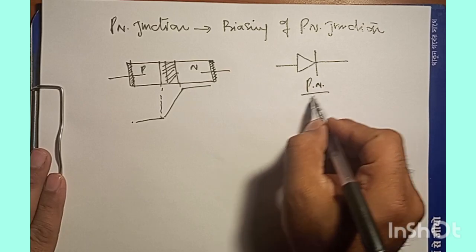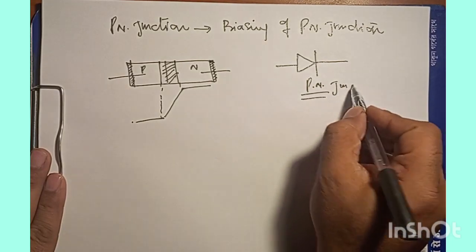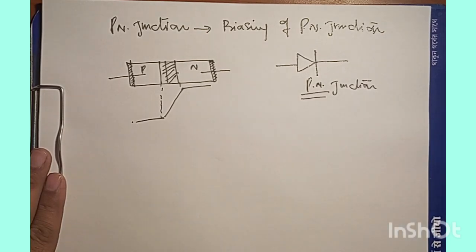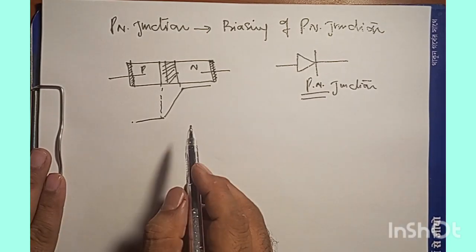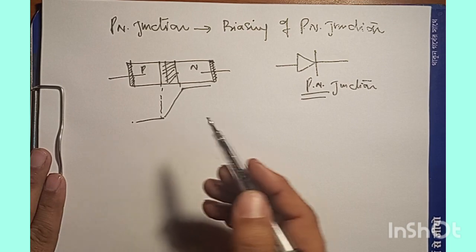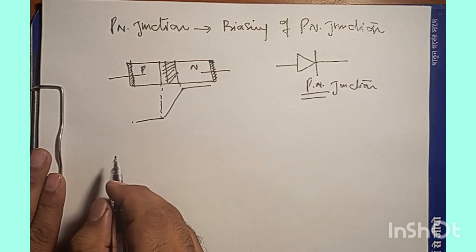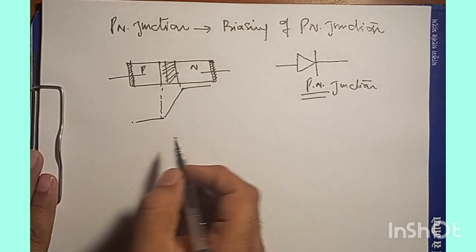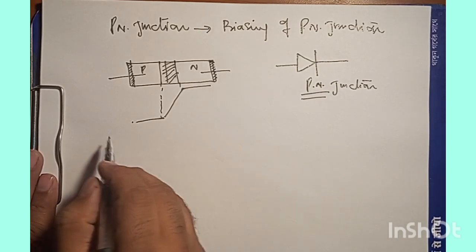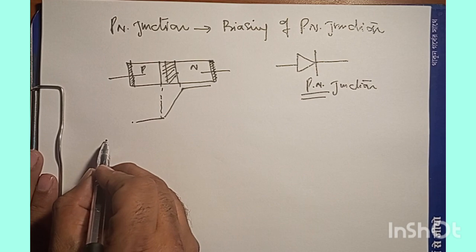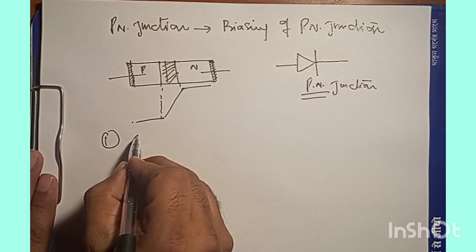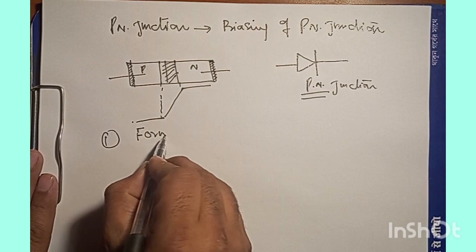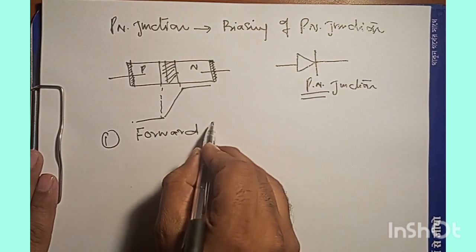This is a symbolic representation of a PN junction. Now the point is how to bias these PN junctions. We have to start with the PN junction in forward biasing mode. So, forward biasing.